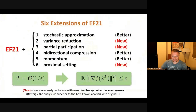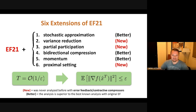We also have an extensions paper where we take the EF21 algorithm and enhance it with bells and whistles such as stochastic approximation — meaning mini-batching — variance reduction, partial participation, compression on the server, momentum, and proximal setting. Thank you very much.